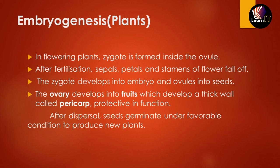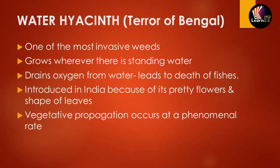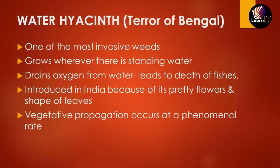A special topic under asexual reproduction is the 'Terror of Bengal,' which is water hyacinth. It is one of the most invasive weeds — it grows wherever there is standing water, drains all the oxygen from the water, and leads to the death of fish. It was introduced to India because of its beautiful flowers and leaf shape. Due to its phenomenal rate of propagation through vegetative means, it has been called the Terror of Bengal as it grows everywhere in the Bengal region.